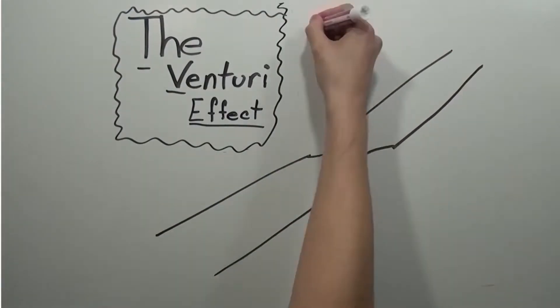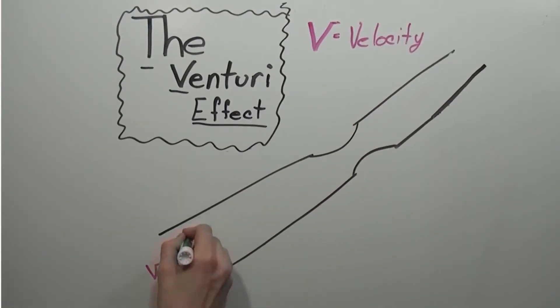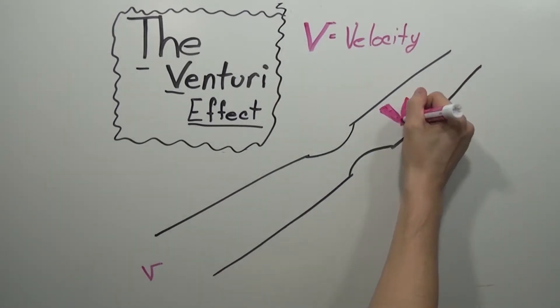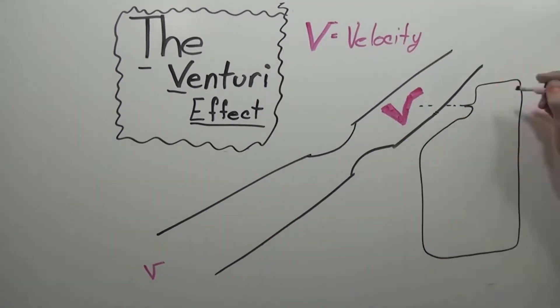At a basic level, the Venturi Effect is simply a reduction in a fluid's pressure as it flows through a narrow section of pipe which is accompanied with an increase in velocity.